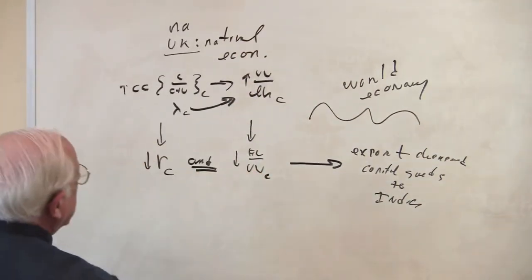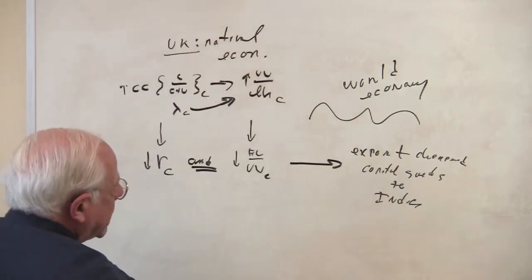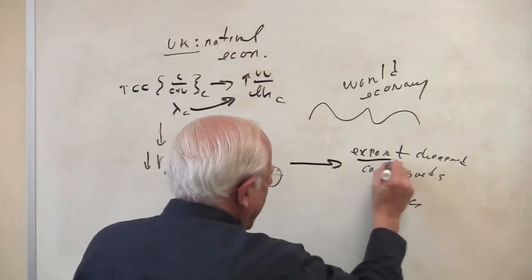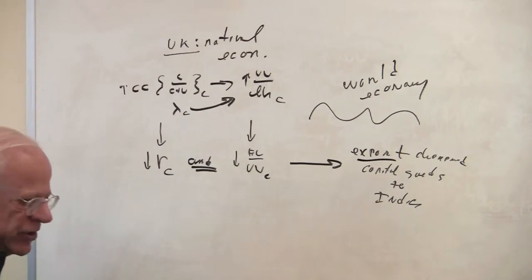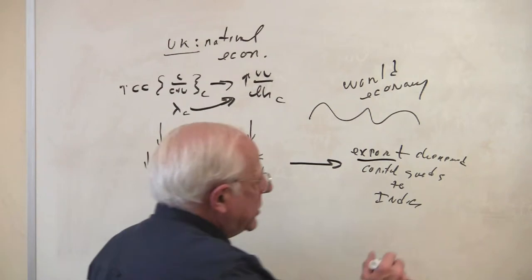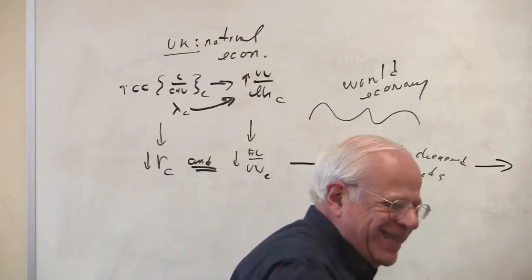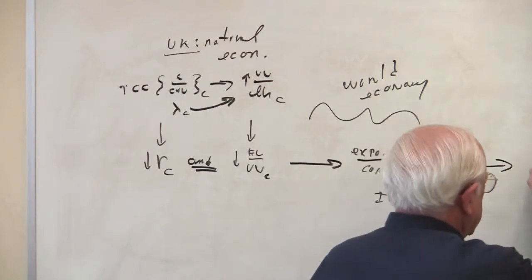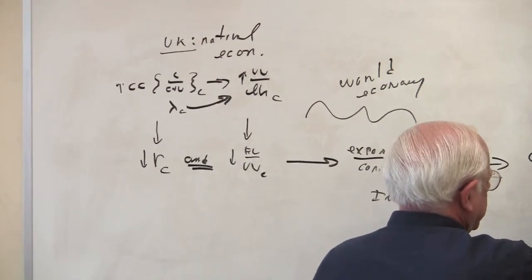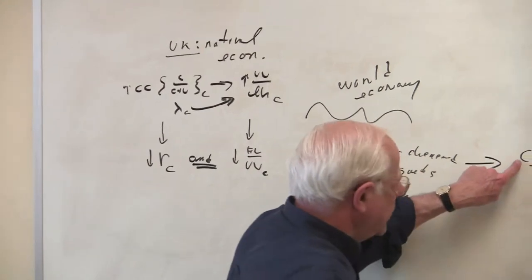So Britain begins to export cheapened capital goods as a result of intense competition within Britain and across Europe. The cheapened capital goods, in turn, these are the imports, in the numerator.